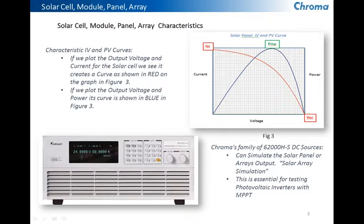Our 62000H family of power supplies can do this very nicely. There are 5, 10, and 15 kilowatt versions of this unit. They go all the way up to a thousand volts, can be put in series up to 1800 volts, and they can be put in parallel to create up to 1.5 megawatts of total power. These units are used as the input power to an actual PV inverter to simulate the solar panel.